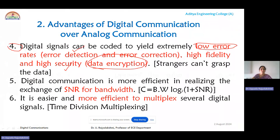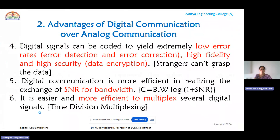Because of high security, unauthorized parties cannot easily access the data compared to analog signals. The fifth advantage is that communication is more efficient in trading off SNR for bandwidth. From the Shannon-Hartley theorem, channel capacity is expressed as bandwidth multiplied by log₂(1 + SNR). The sixth advantage is that it is easier and more efficient to multiplex several digital signals, transmitting multiple signals via a single channel using time division multiplexing.